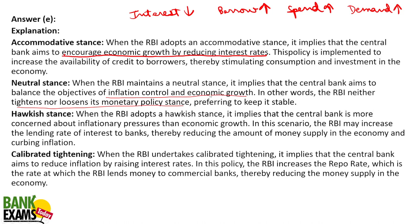Hawkish stance means the RBI is more concerned about inflationary pressures than economic growth. For example, from 2014 to 2016, the RBI adopted a hawkish stance when inflation was upwards of 10%. When the major goal is controlling inflation rather than promoting economic growth, that is called a hawkish stance.